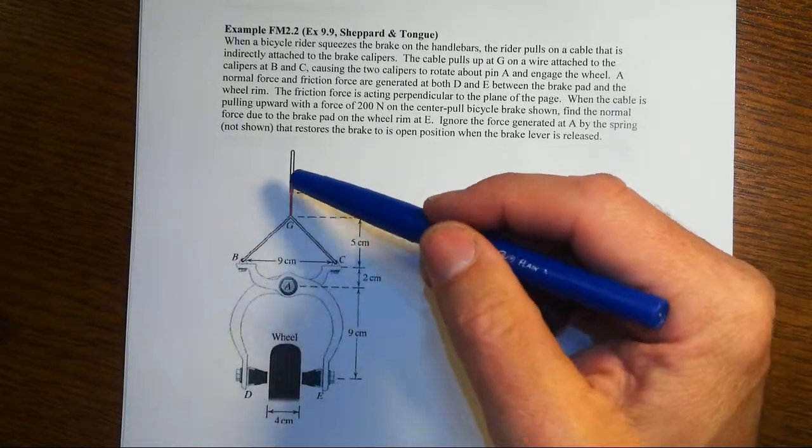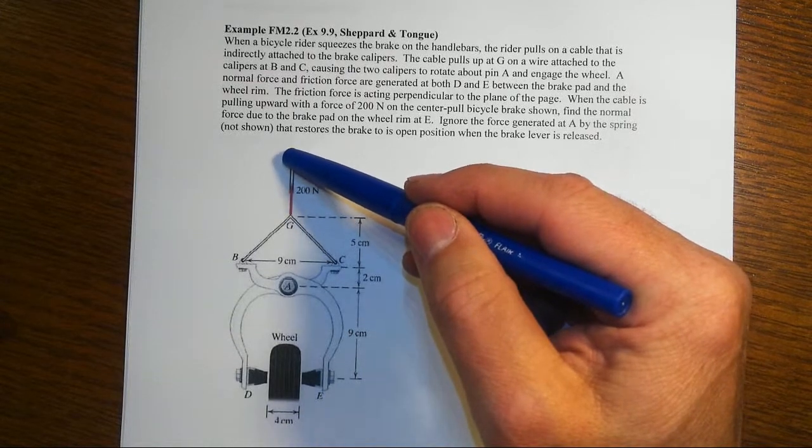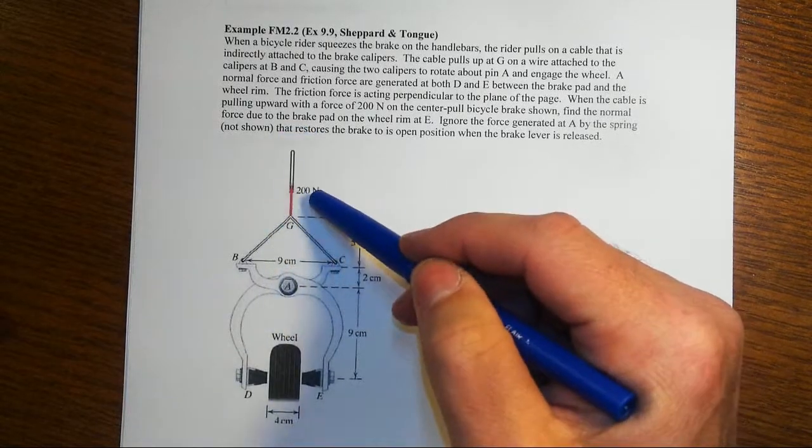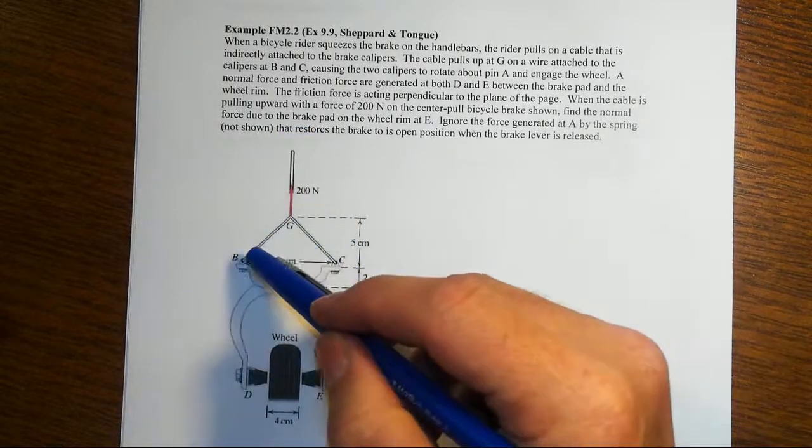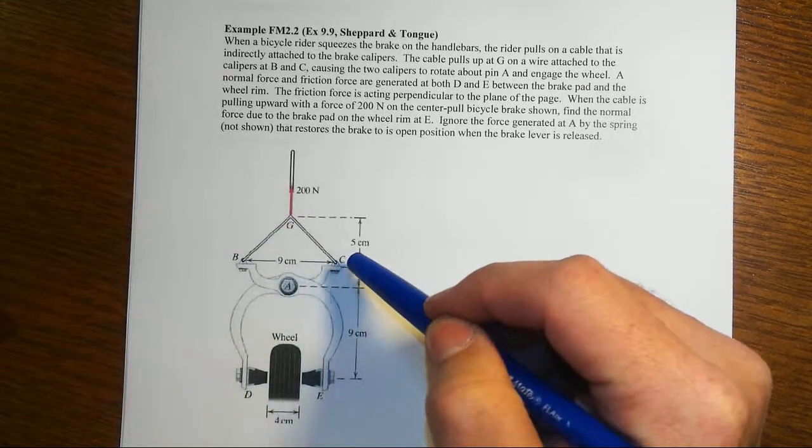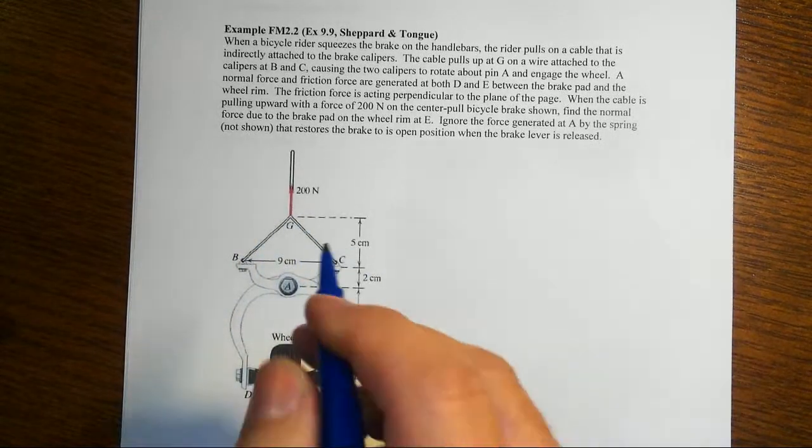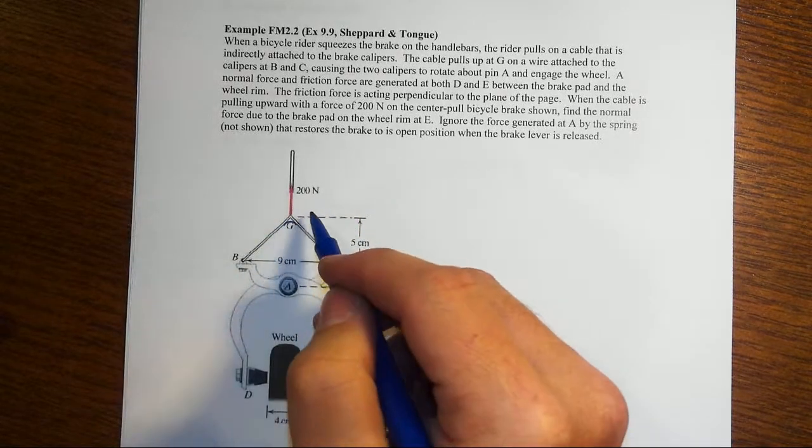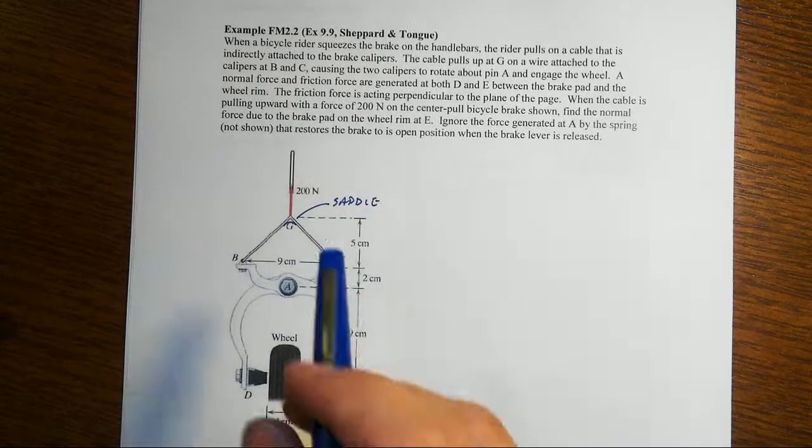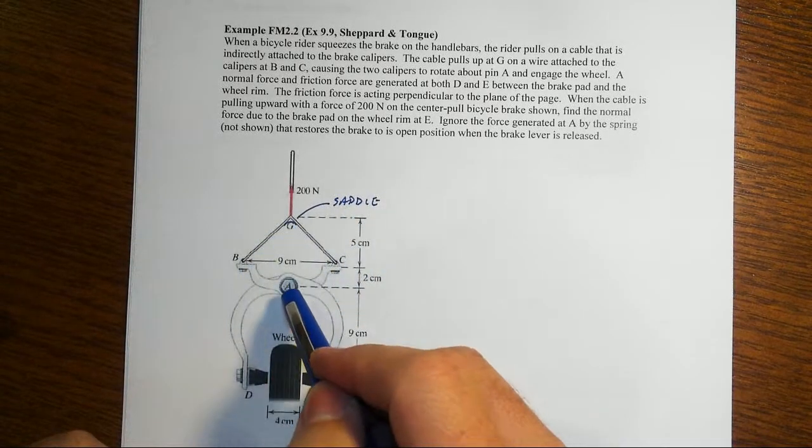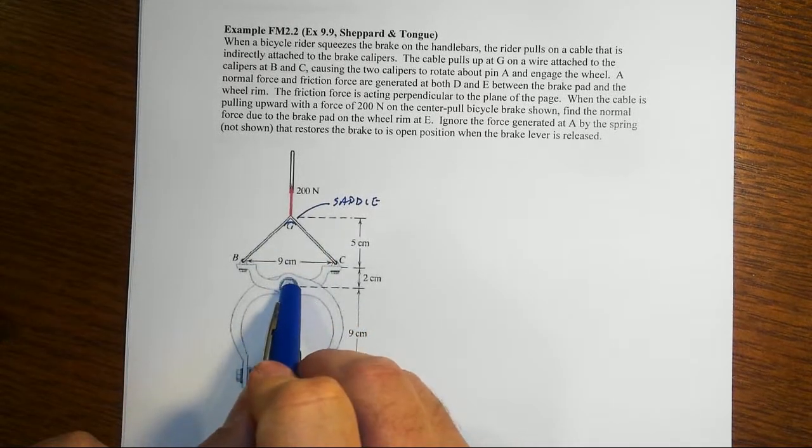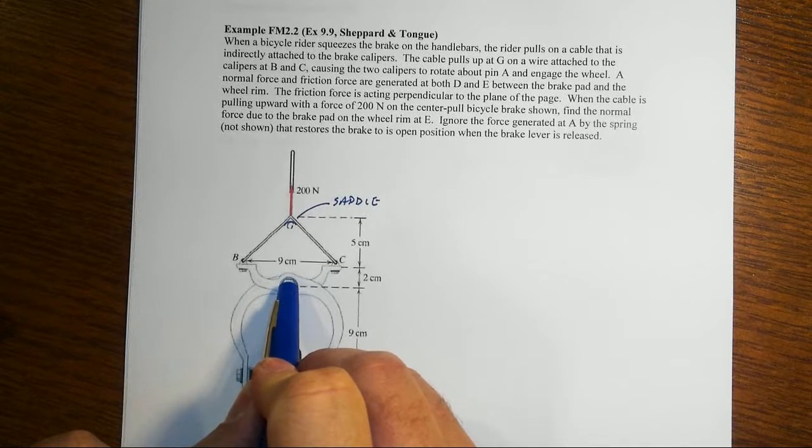On your handlebars, you have grips that are attached to a cable. You squeeze the grip and that's going to pull on a cable, which we're pulling on with 200 newtons force. That cable is then going to pull up on this little wire that stretches over BGC. Now usually there's a saddle that happens right here at G so you don't kink this wire. And then the whole system is pinned at A, and that pin goes into the frame of the bike.